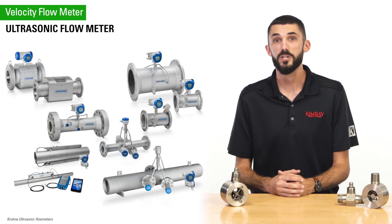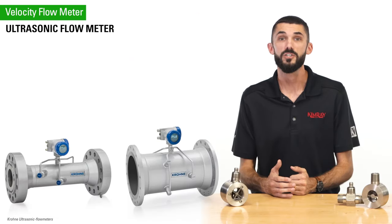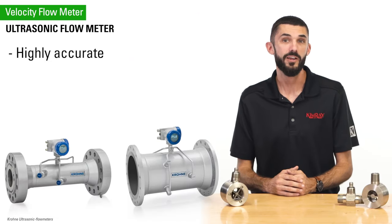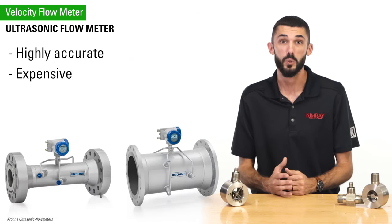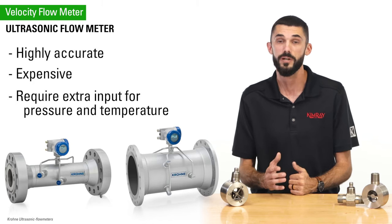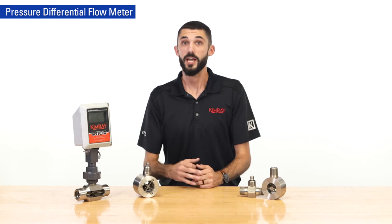Ultrasonic flow meters measure the difference in pulse transit time that travel from an upstream transducer to a downstream sensor and vice versa. Ultrasonic meters are highly accurate but very expensive and require extra input for pressure and temperature.